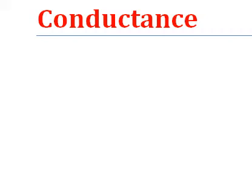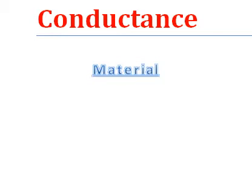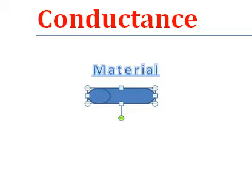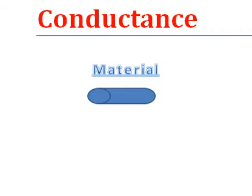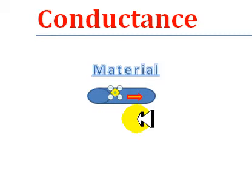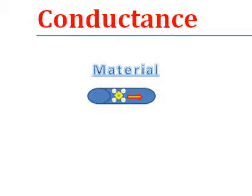So what we're going to do is take some sort of material — any material — and put some sort of conductor on it. What's going to happen is you're going to have some sort of current going through there, whether conventional or electron flow.